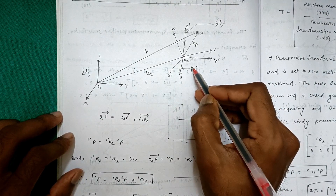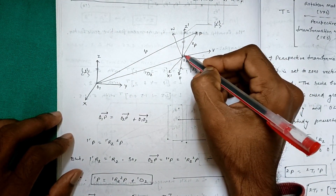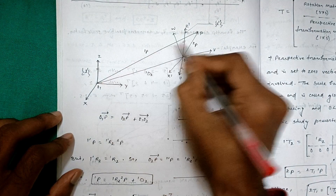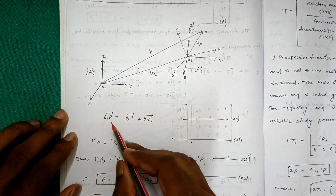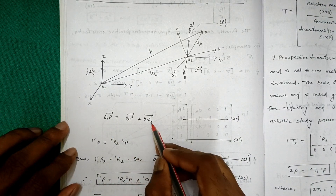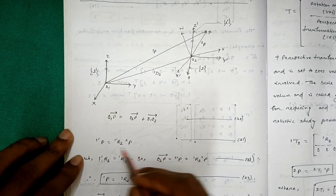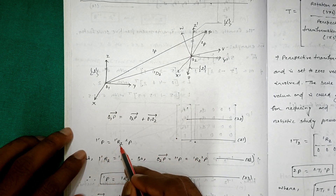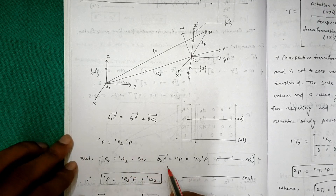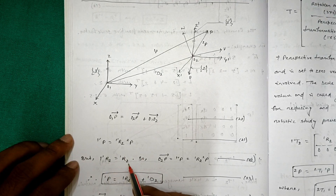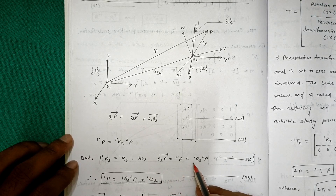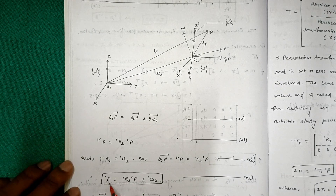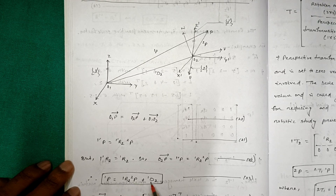Frame 1 and frame 2 share a common point P, where 2p is the position vector from O2 and 1p is the position vector from O1. The distance from O1 to O2 is 1d2. The vector relationship is: O1P = 1R2 · 2p, and since 1'R2 = 1R2 · 2p, we get O1P = 1R2 · 2p + 1d2.